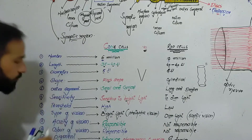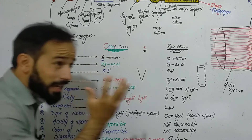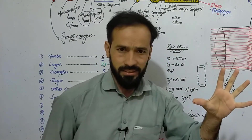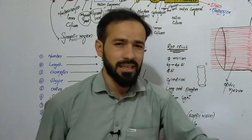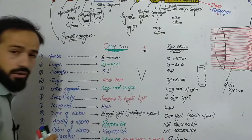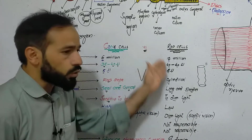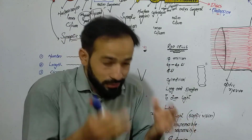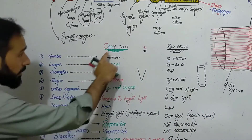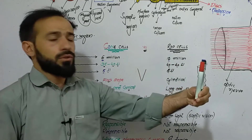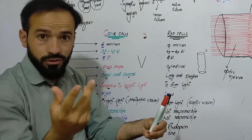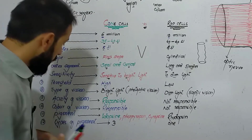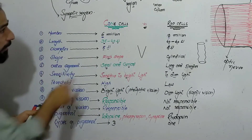The next difference is in the acuity of vision. Acuity of vision means you can see an object clearly. Rods are responsible for acuity of vision, and cones are not responsible for acuity. Then the difference in color vision: cones are responsible for showing you the colors, but rods are not responsible for showing colors.